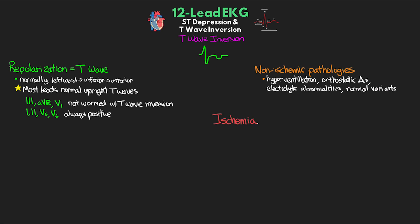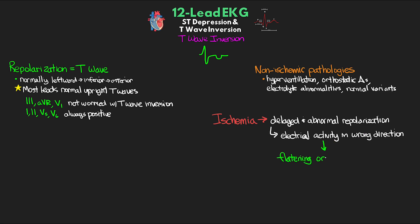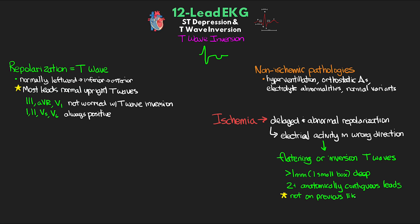When looking at ischemia, we can have delayed and abnormal repolarization of the ventricle, leading to electrical activity going in the wrong direction and causing flattening or inversion of T-waves on the EKG. We're looking for T-wave inversion that's at least one millimeter deep — one small box — present in two or more anatomically contiguous leads, and especially if it's not present on a previous EKG. T-wave inversion can also precede changes we see with the ST segment, such as ST depression or elevation, and therefore in the context of signs and symptoms of ischemia, T-wave inversion should absolutely be taken very seriously.